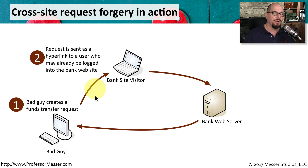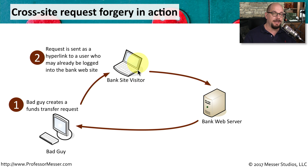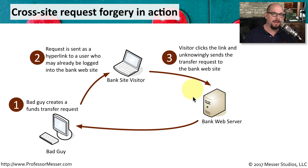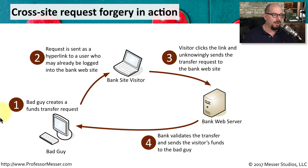So he's going to send this hyperlink to a third-party user. This might be in a message or in an email, but he's going to somehow get that URL to a bank site visitor who's already logged in to their bank site account. They're going to see this link and click on it, which is then going to send a request to the bank web server to perform the web transfer — telling the web server to please perform a transfer from their account and send that transfer to the bad guy.